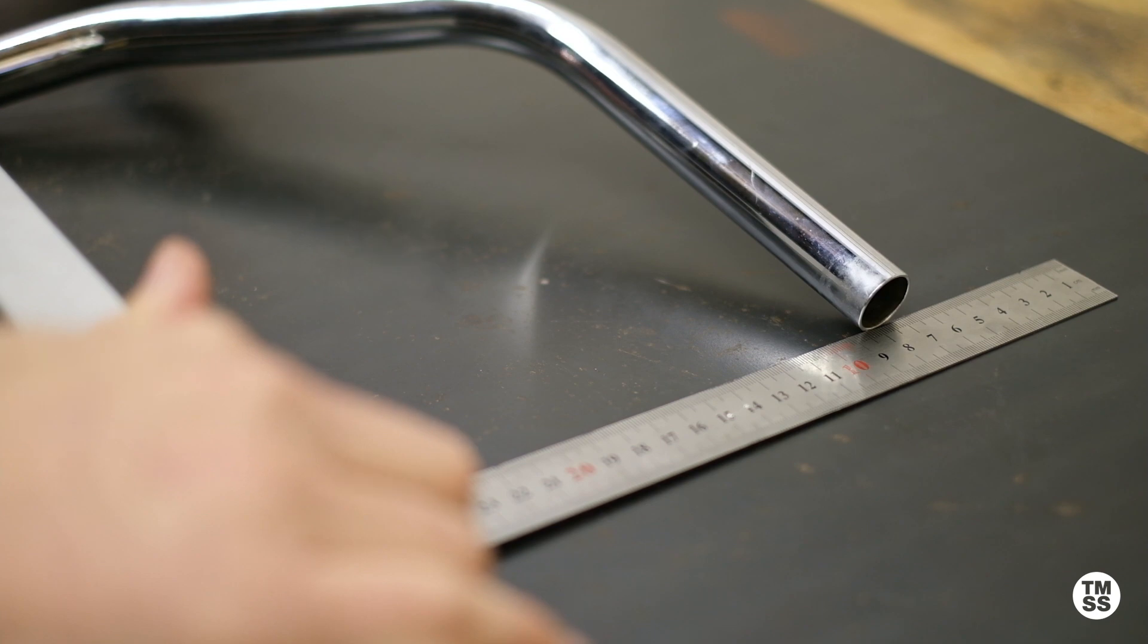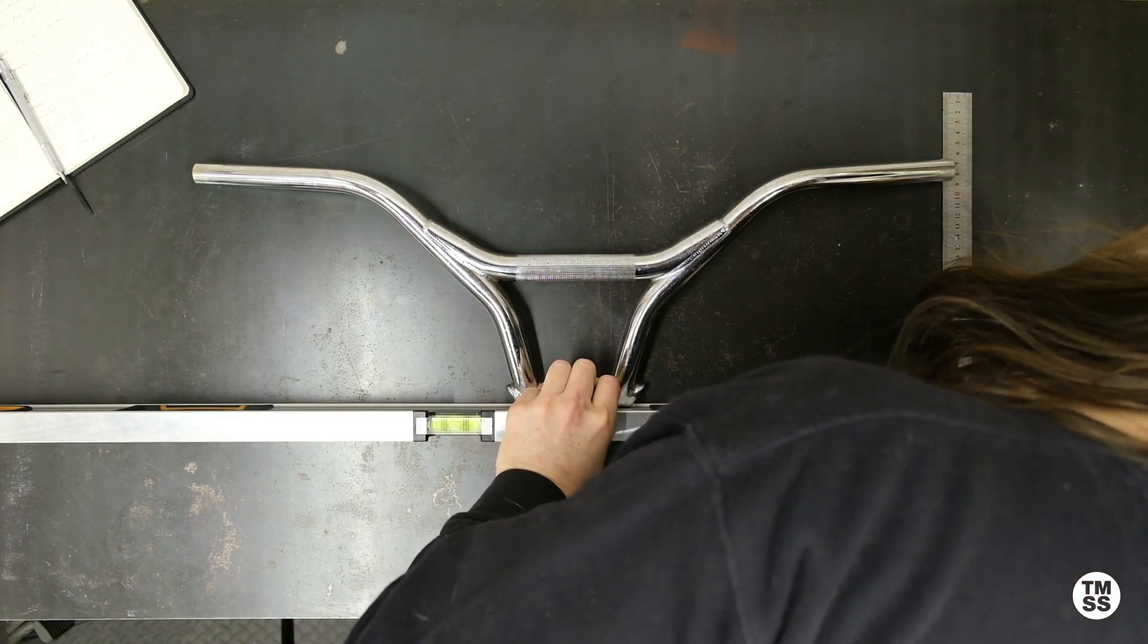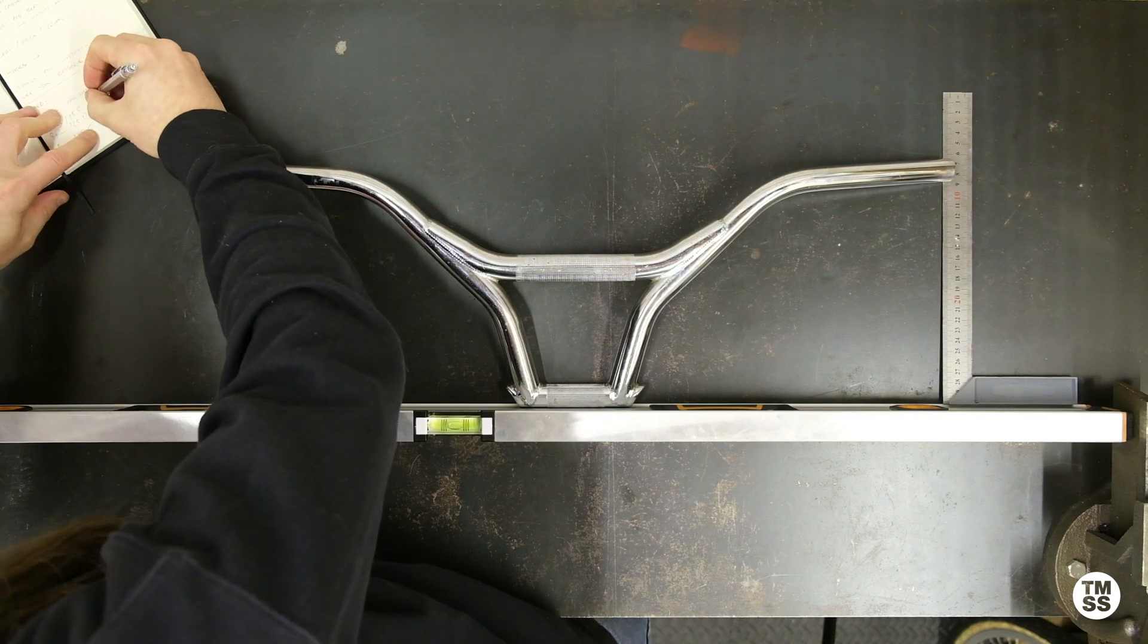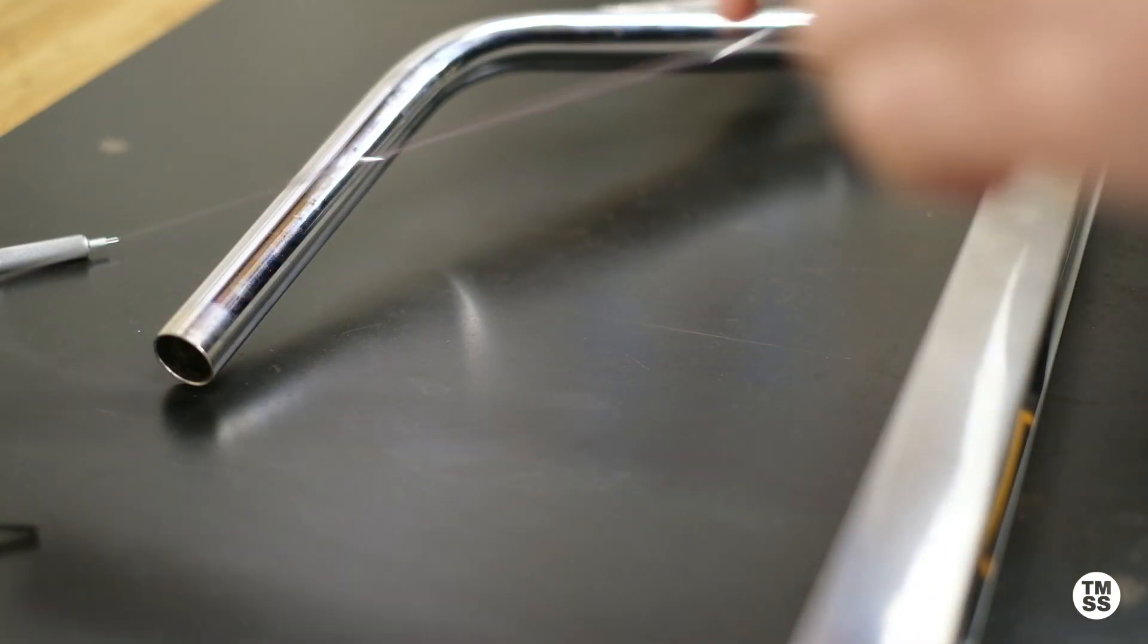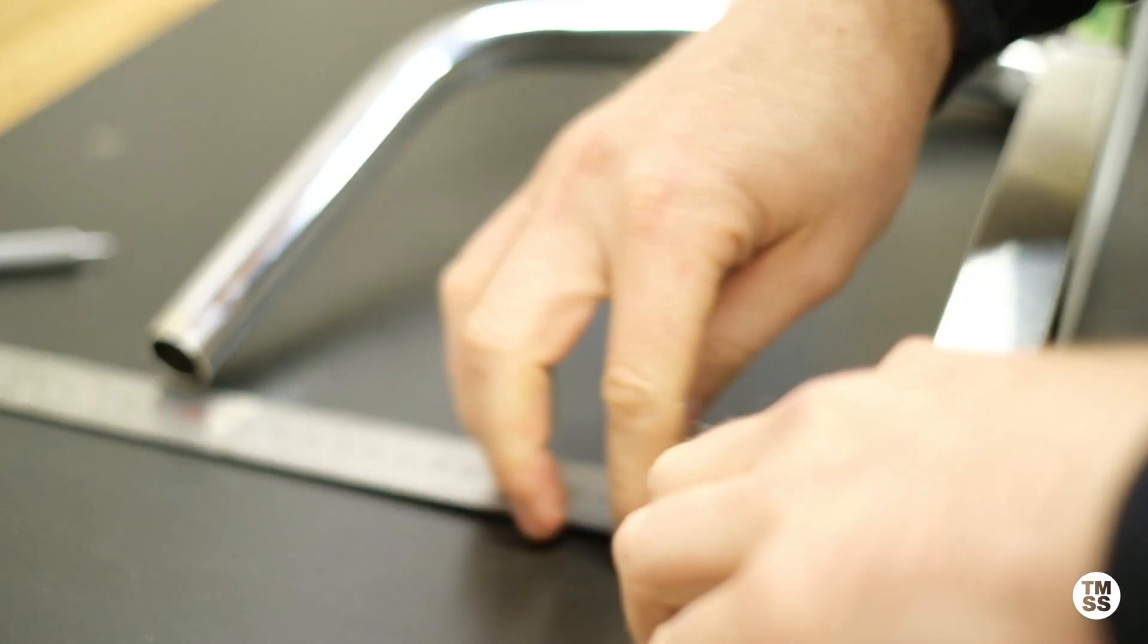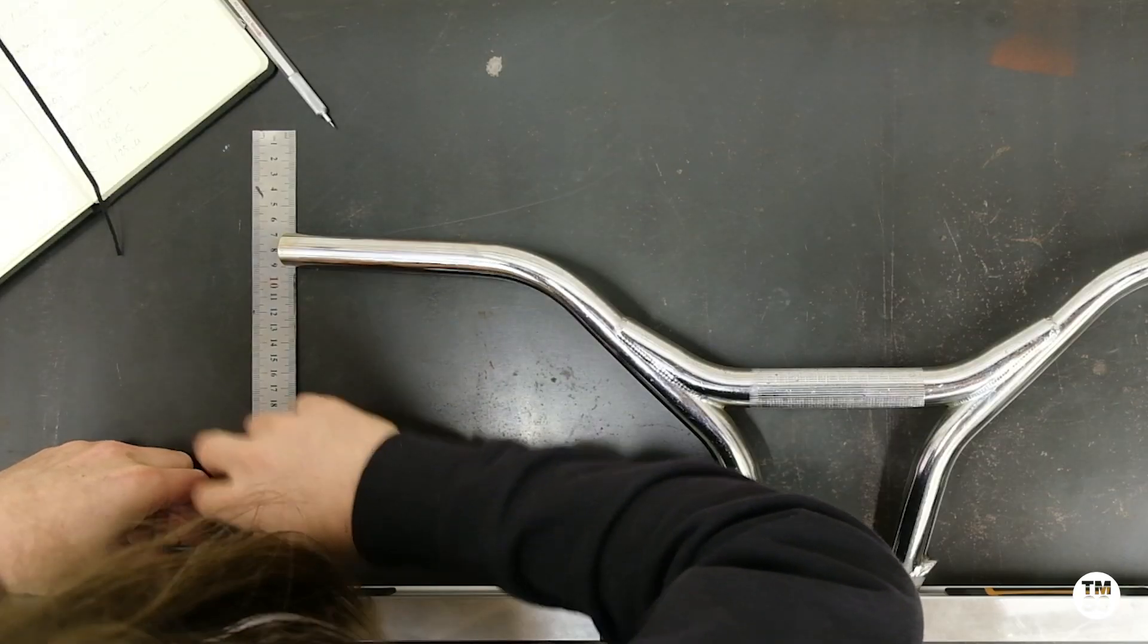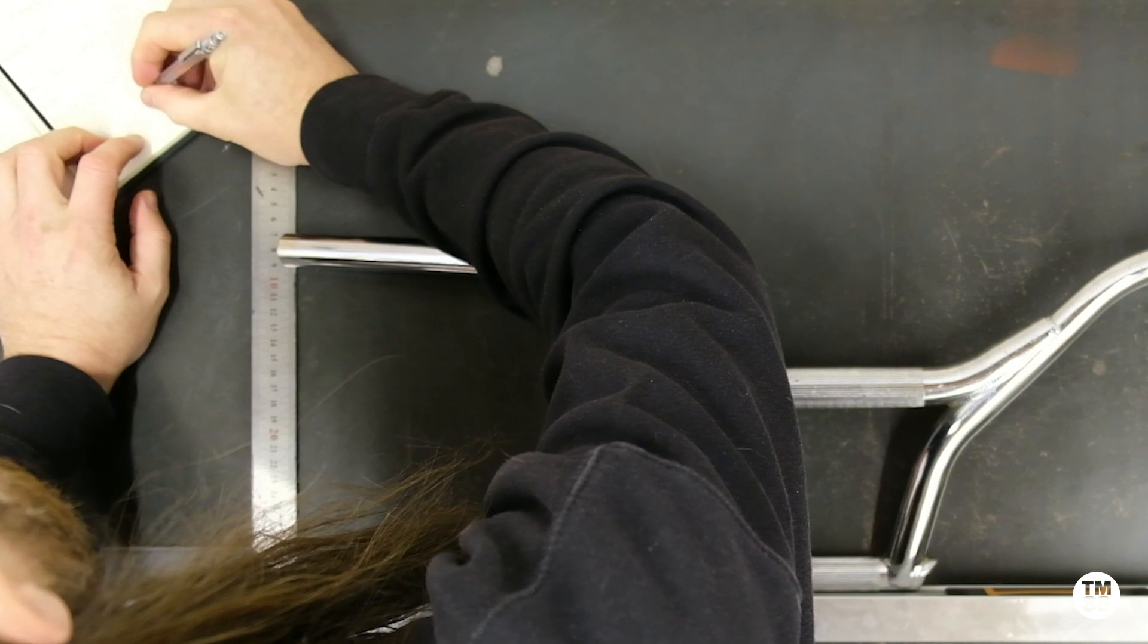For this step, it's really important that everything is squared up straight, otherwise you're going to get inaccurate measurements. After measuring the first side and taking a note of that measurement, we're going to repeat the process on the opposite end. The goal here is to get the same measurement on both sides, and that's why it's really important to make sure that things are properly squared up.